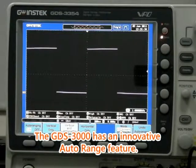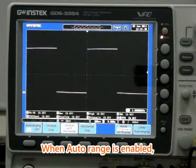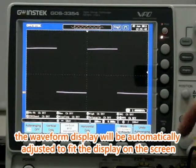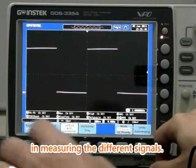The GDS-3000 has an innovative auto range feature. When auto range is enabled, the waveform display will be automatically adjusted to fit the display on the screen when measuring different signals.